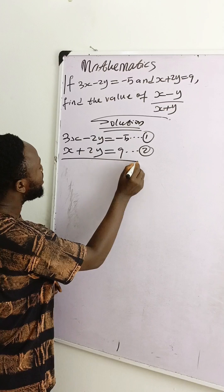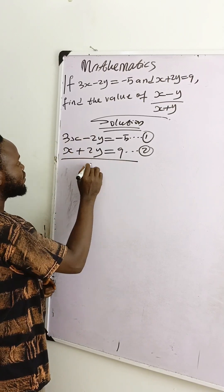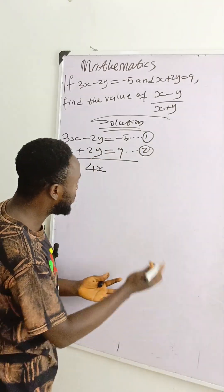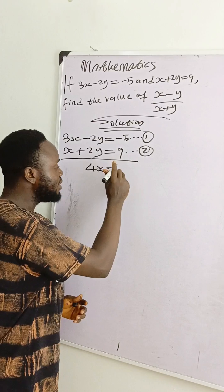From here, let's use the elimination method to solve. We add this and this. 3x plus x is 4x. This and this will give you 0. That's the elimination. Then this is equal to minus 5 plus 9 is 4.